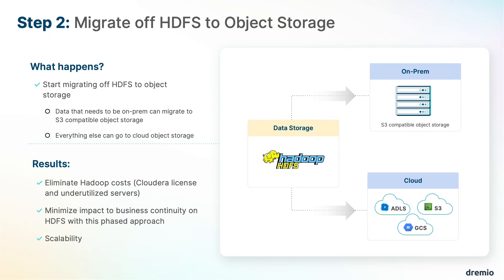Once your queries are running in seconds and you have empowered your business users with self-service analytics, you can start to migrate the data off of HDFS to object storage in the cloud or on-prem, to S3-compatible technologies like MinIO, ECS, and others. The data movement would be done with an ETL tool. This process is very low-risk because you'll be moving data in stages and have both data sets available to Dremio for testing before turning off the data stored in Hadoop. By turning off your Hadoop environment, you would not only reduce hardware and license cost, but also reduce the complexity in your architecture.